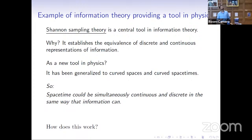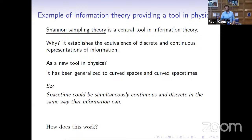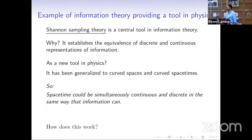Starting with the first attitude: information theory providing tools. The tool is called Shannon sampling theory — an integral part of information theory, at its very heart. Shannon sampling theory establishes the equivalence of discrete and continuous representations of information. It has been generalized to curved spaces and curved space-times. As a consequence, it provides tools to describe spacetime simultaneously as continuous and discrete. When you record music, you have a discrete file on your computer, and yet it can be entirely equivalent to the continuous signal you hear as music. There's no error and no approximation.